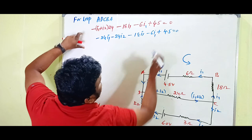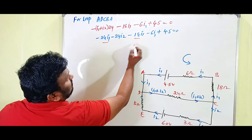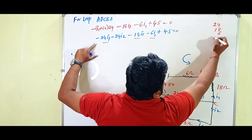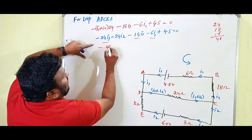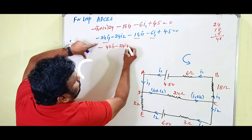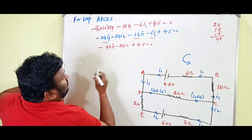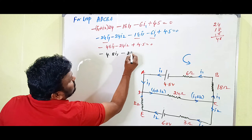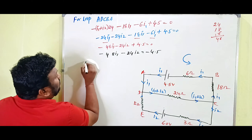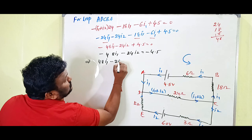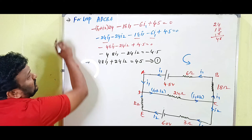Collecting terms: 24·i1 + 18·i1 + 6·i1 = 48·i1. So the equation becomes: minus 48·i1 minus 24·i2 plus 4.5 = 0. Rearranging: 48·i1 + 24·i2 = 4.5. This is Equation 1.